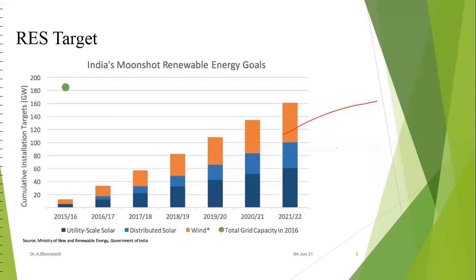India has set targets in line with the Paris Agreement of 2015, in which more than 150 countries signed commitments. Researchers and forecasters have identified that by the year 2050, the average global temperature will rise up to 4 degrees Celsius due to greenhouse gas emissions from industries, transportation, and power generation.